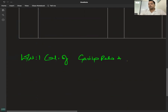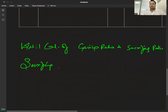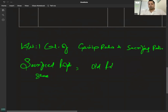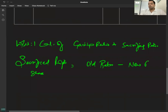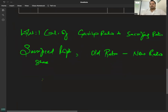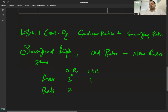हम sacrificing ratio calculate करते हैं। Sacrifice = old ratio minus new ratio। Partners Anu और Bala हैं। Old ratio था 3:2, new ratio है 1:1. Anu का old share = 3/5, new share = 1/2. Sacrifice = 3/5 minus 1/2.